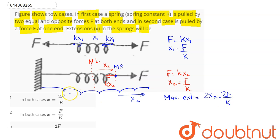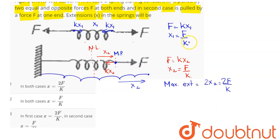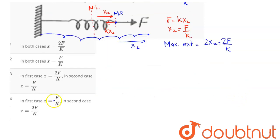In the second case, maximum extension is 2F/k, and in the first case, maximum extension is F/k. So matching option four: in first case F/k, and in second case 2F/k. Option number four is the correct answer.